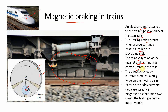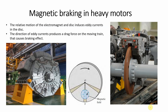The relative motion of magnet and rail induces eddy current in the rails۔ Magnet رکھا ہوا ہے لیکن اس کا wheel اور rail move کر رہے ہیں — اس relative motion کی وجہ سے eddy current produce ہو رہا ہے۔ The direction of eddy current produces a drag force on the moving train۔ Because the eddy current decreases steadily in magnitude as the train slows down, the braking effect is smooth — جب train زیادہ تیزی سے move کر رہی ہوگی opposing force زیادہ ہوگی اور جیسے slow ہوگی force بھی کم ہوتی جائے گی۔